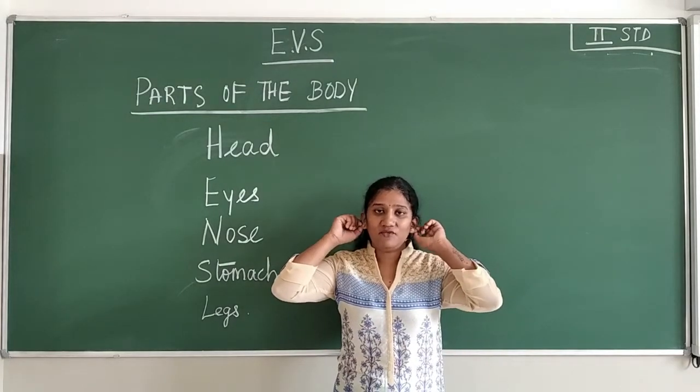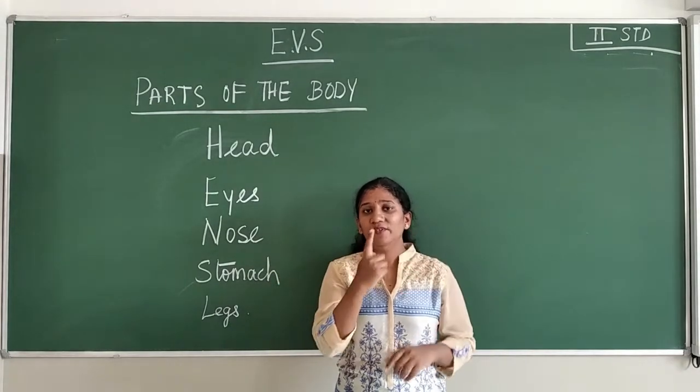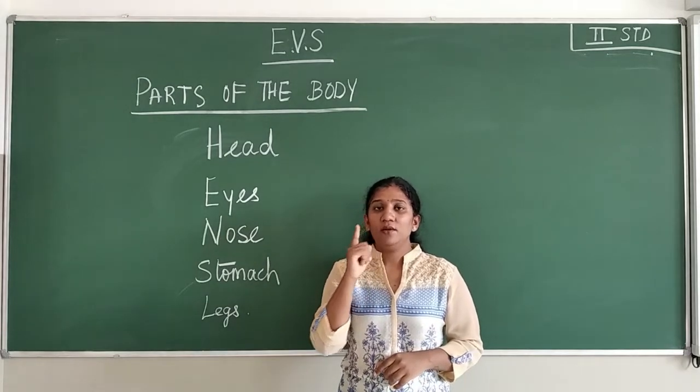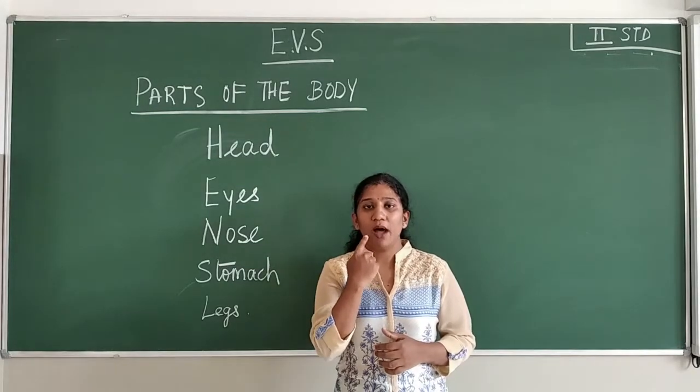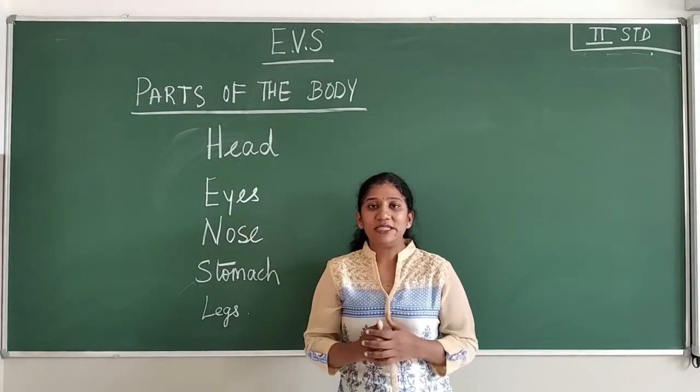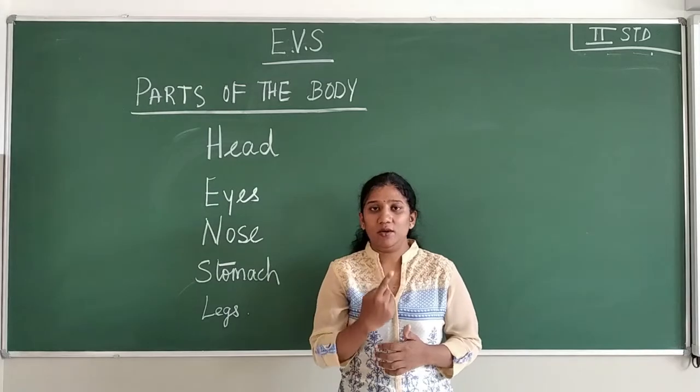We have ears. We have two ears children. We have a nose, one nose we have. We have a mouth. This is our mouth. Inside the mouth we have teeth and tongue.